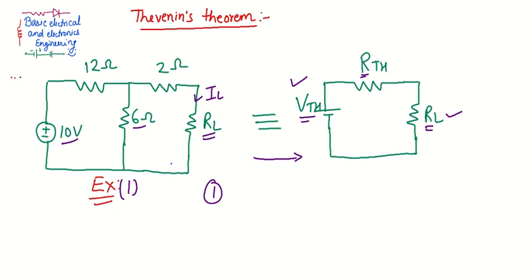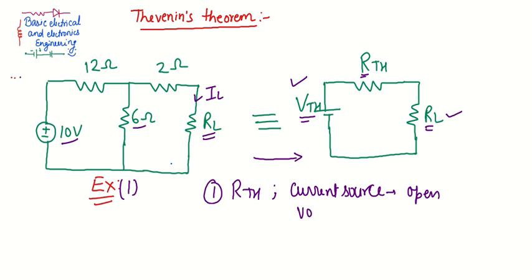The first step is to find out the value of RTH, that is Thevenin's resistance. For calculating Thevenin's resistance, any current source is open-circuited and any voltage source is short-circuited. In this example there is no current source, so the single voltage source will be short-circuited, and we also need to remove the load resistor.